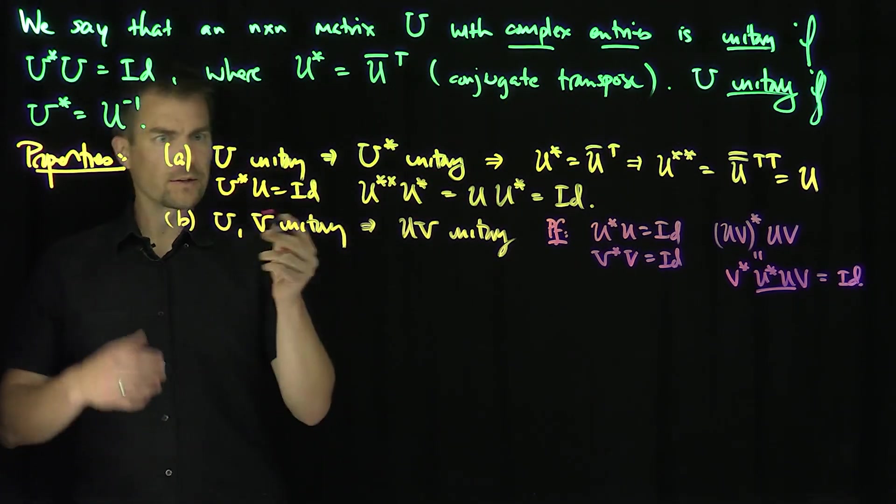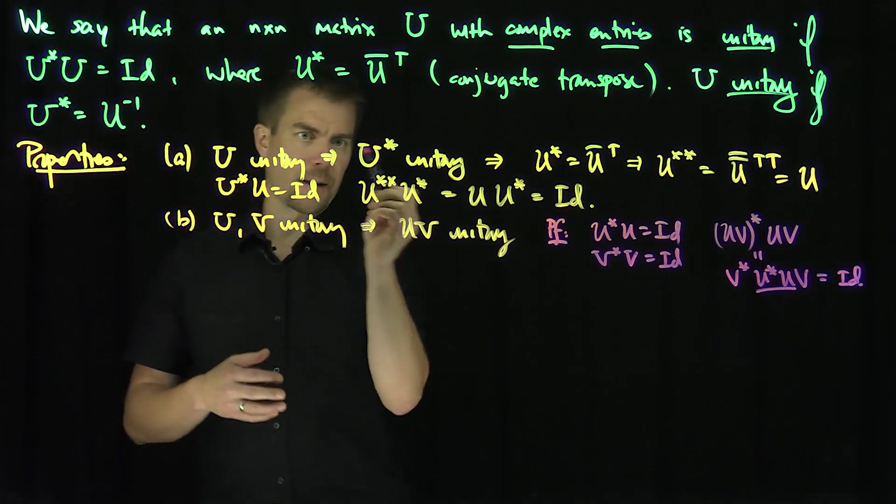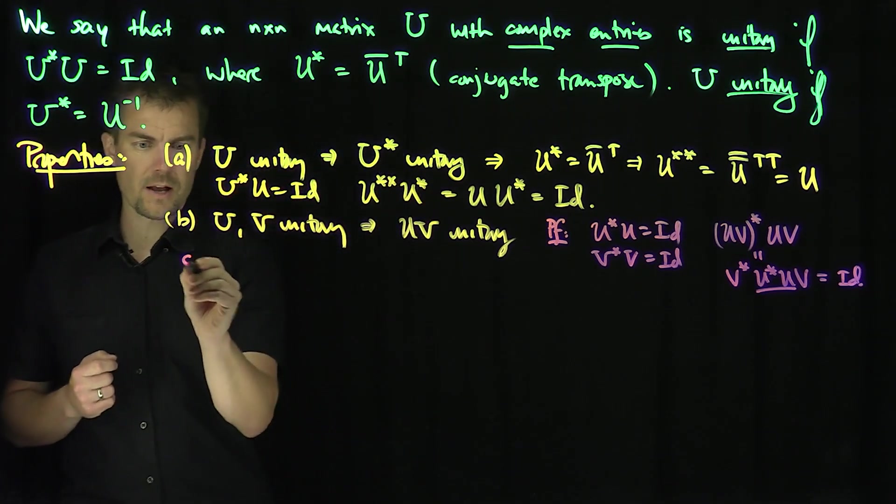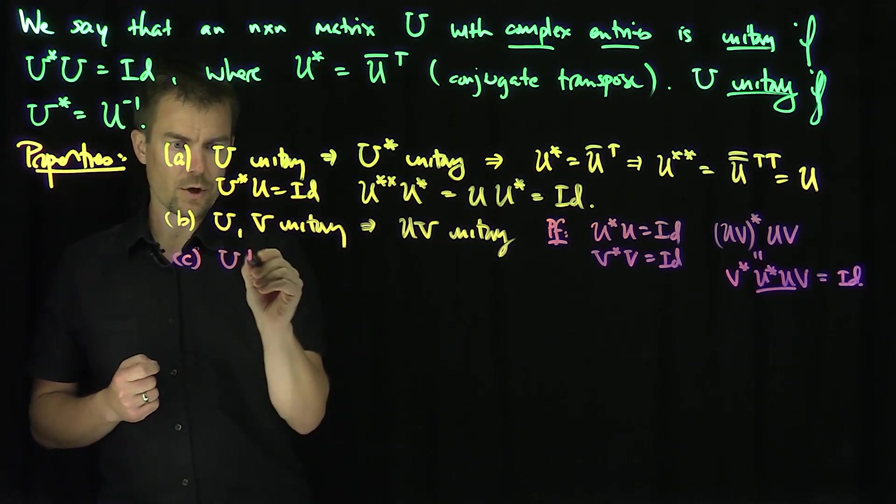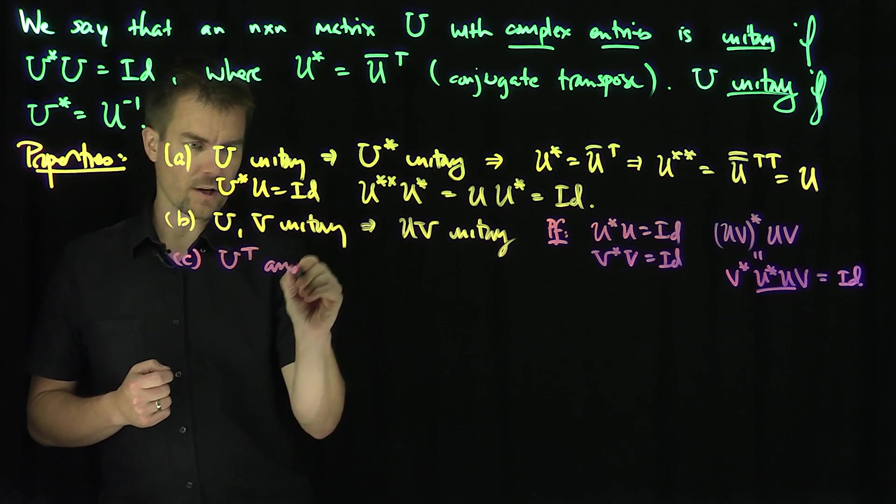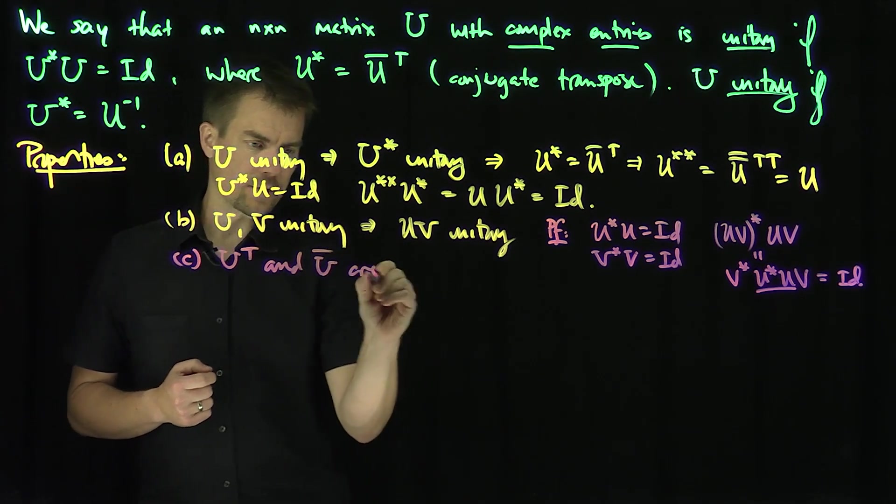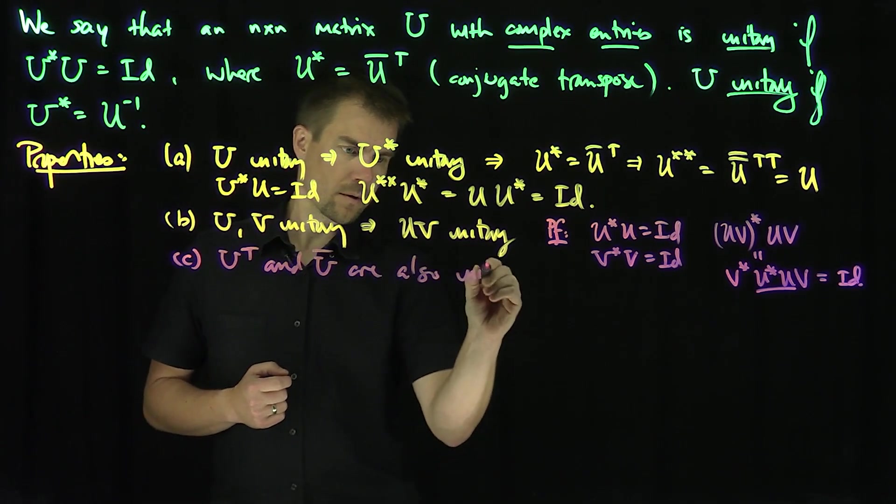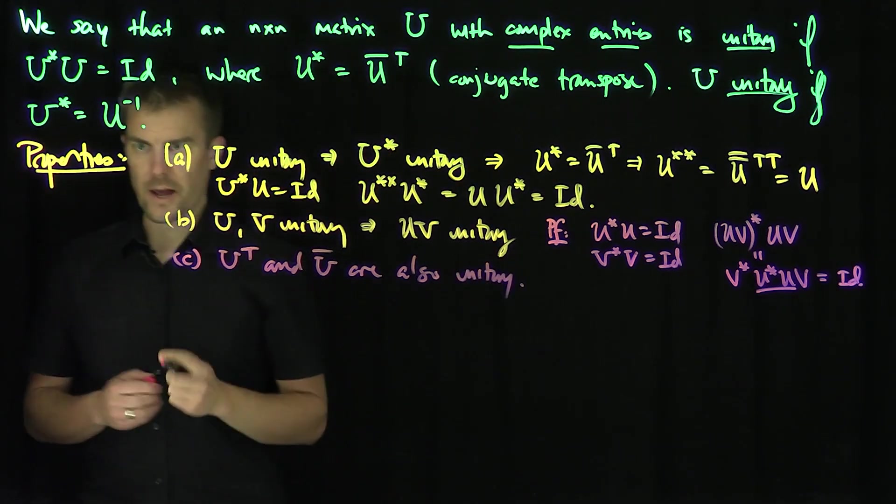And then also, I can prove similar things about the complex conjugate and the transpose. So I'll leave this as an exercise, but that's easy to show. So U transpose and U conjugate are also unitary by the same argument as part A.